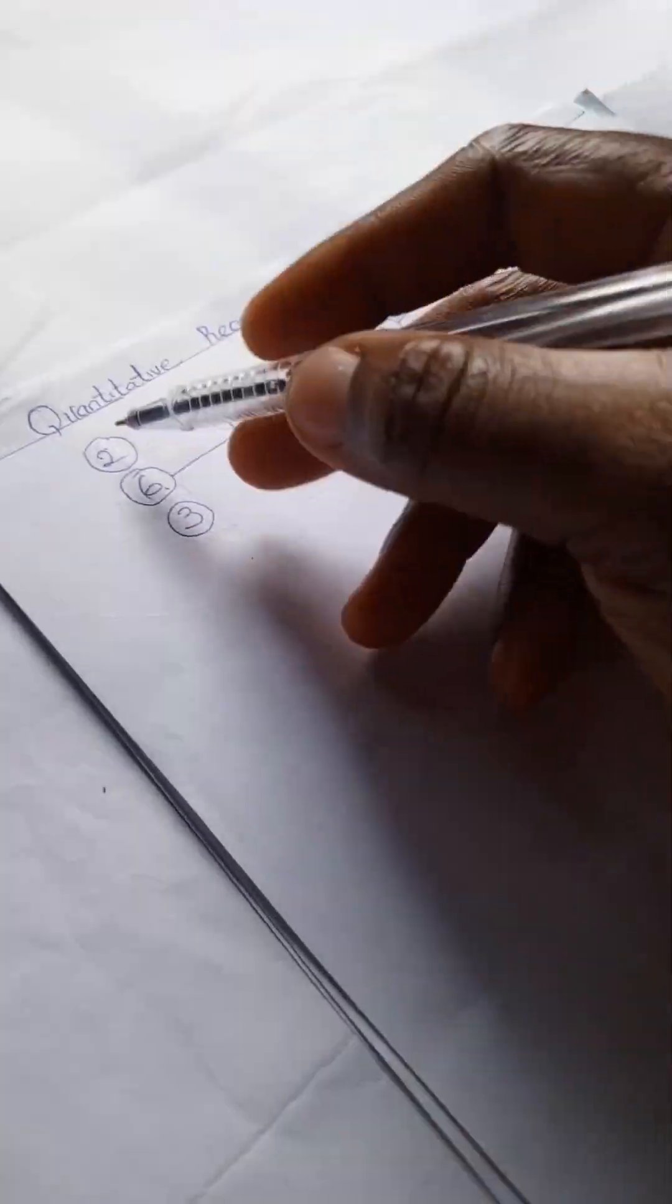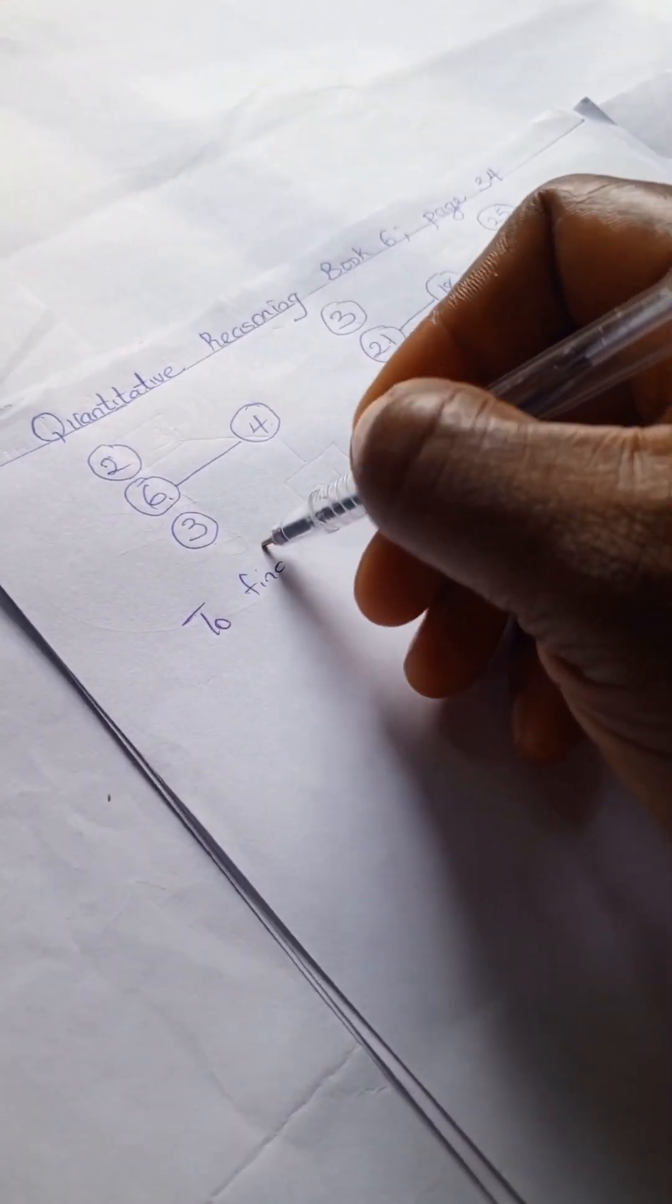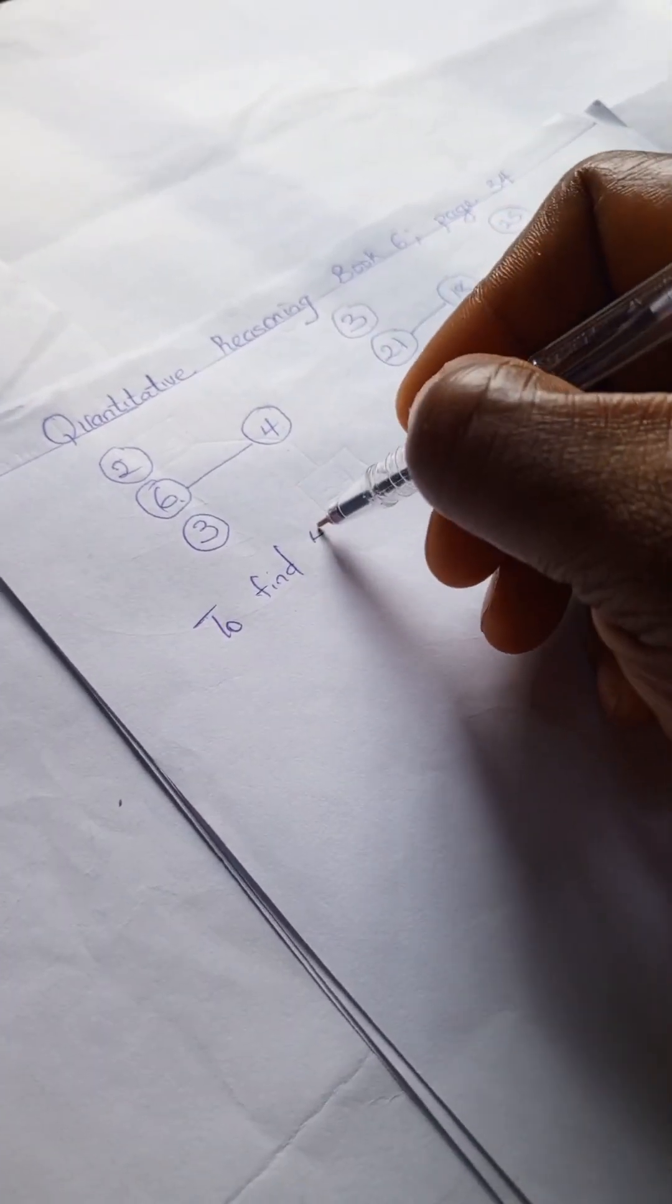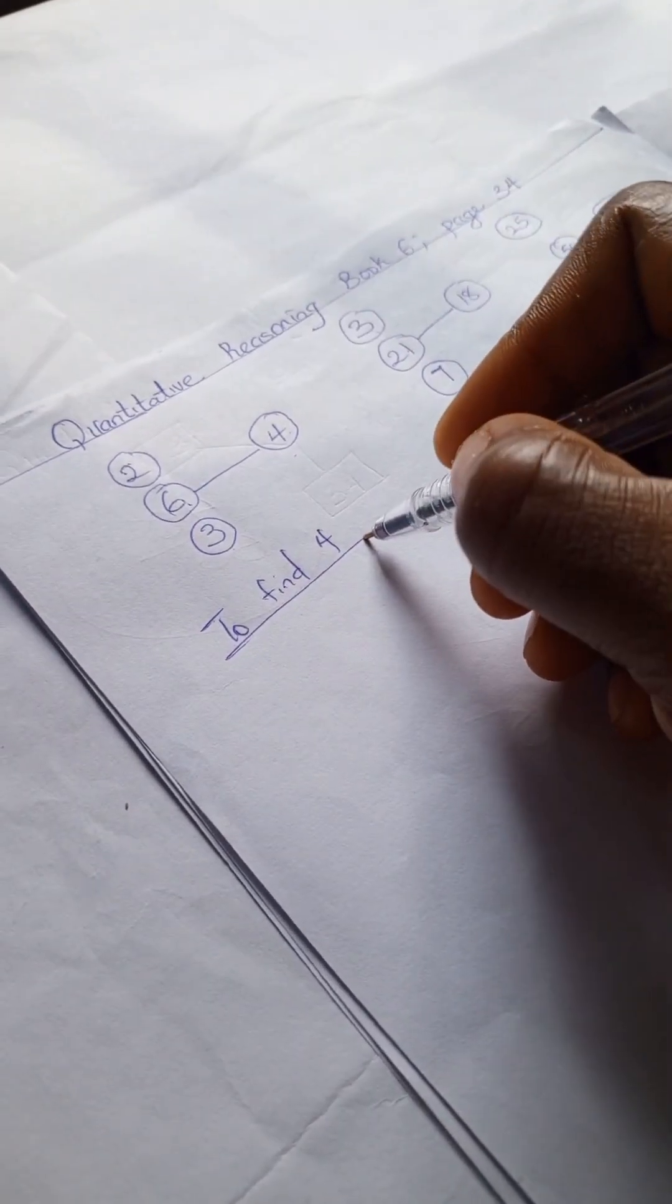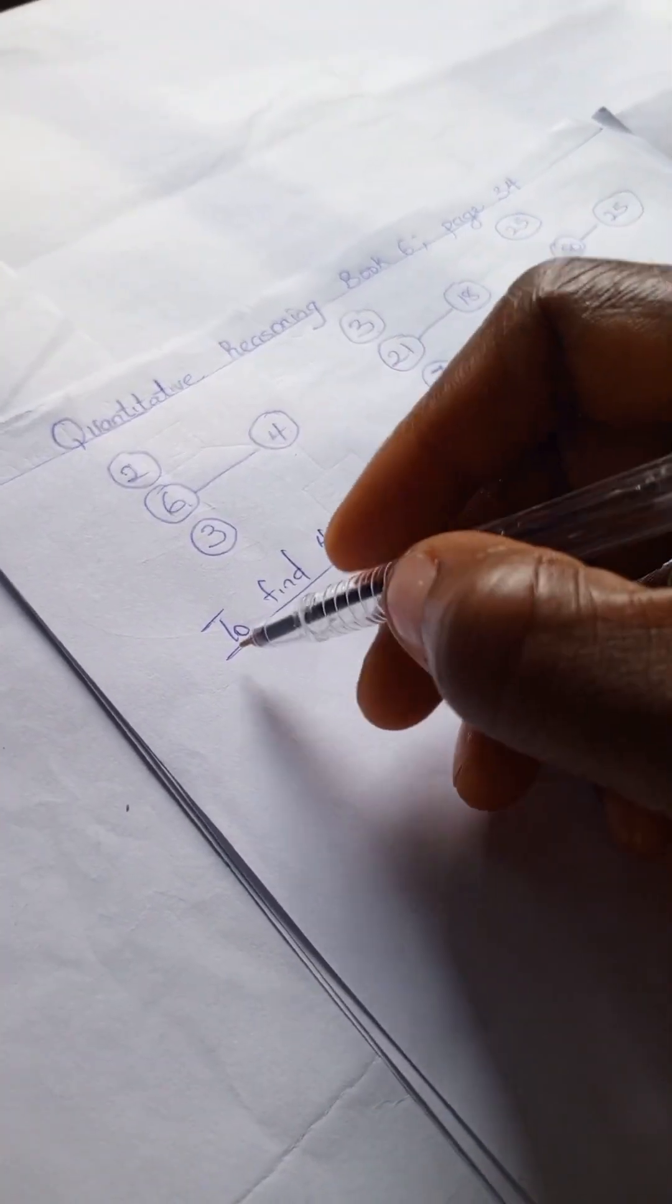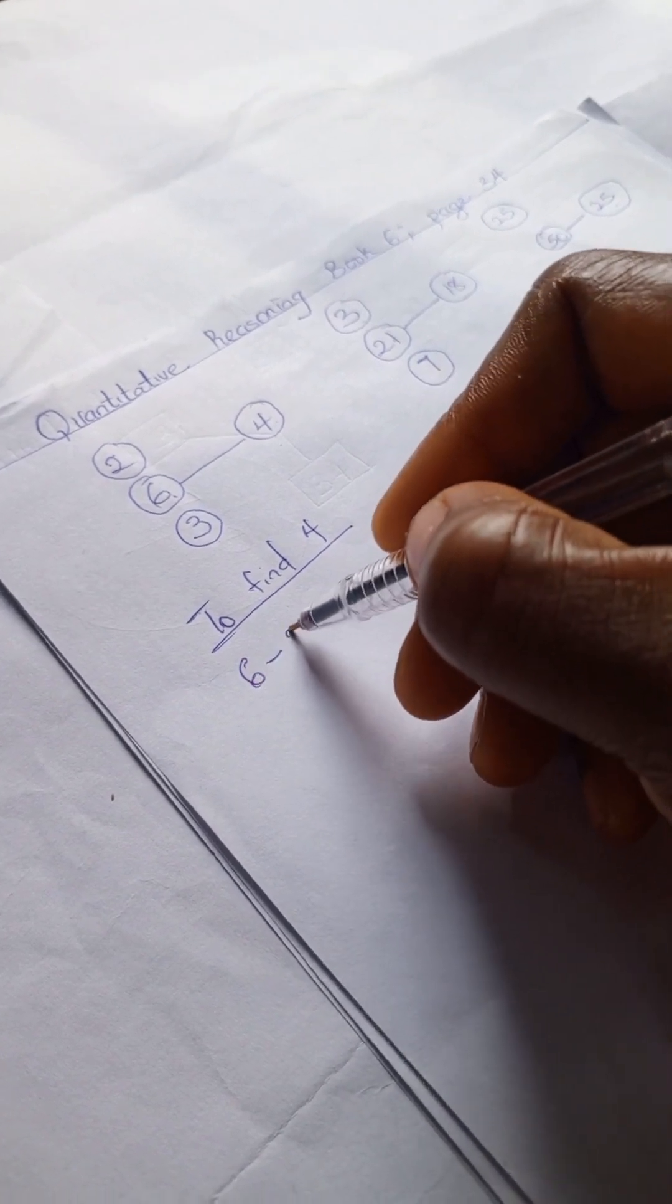Let's begin with this to find 4. So to find 4 here, we're going to have 6 plus 2, that gives us 4.